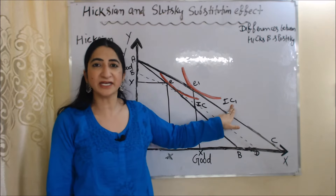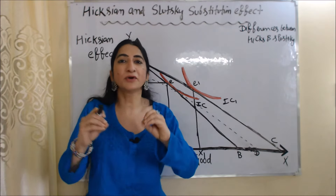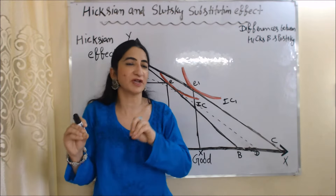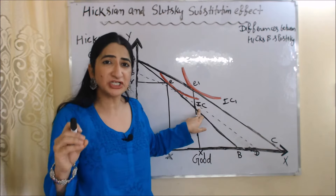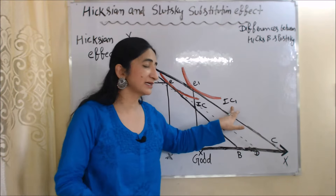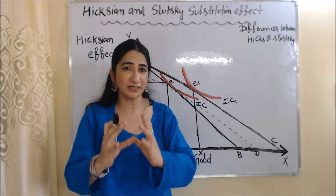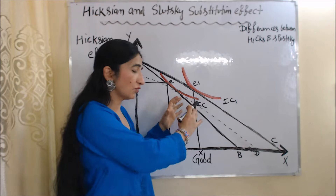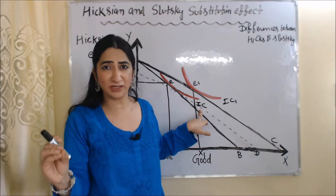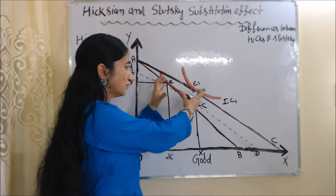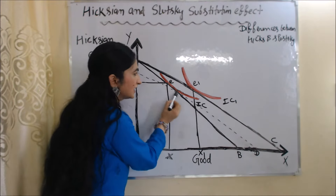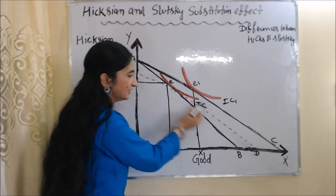As the price of X falls, the consumer reaches their higher indifference curve IC1. But according to Hicks, we should reduce the money income of the consumer in such a way so that he returns back to his initial indifference curve again. As we reduce the money income of the consumer, his budget line shifts inward. So ED is the new budget line — this dotted line represents the new budget line of the consumer.